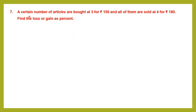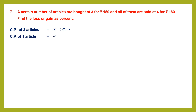Question 7. A certain number of articles are bought at 3 for 450 rupees and all of them are sold at 4 for 480 rupees. Find the loss or gain as percent. So bought means cost price, sold means selling price. Since these numbers are different, we have to find the cost price of one article and the selling price of one article. Let's begin: cost price of 3 articles is 150 rupees. We must find the cost price of 1 article, which is 150 divided by 3.